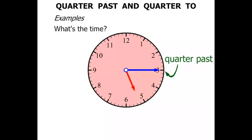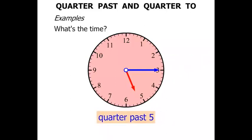So we've got to think quarter past what? We're looking at the hour hand. You can see that it's just gone past the five. Hence it's quarter past five. And that in digital form is 5.15.